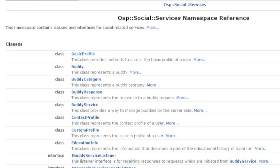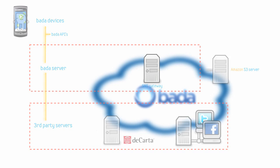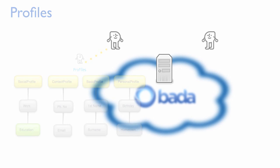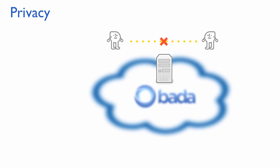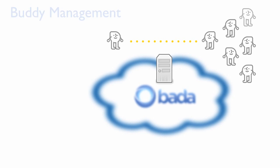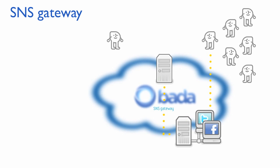The social services namespace contains the classes for building social relationships among Bada users. These services are made possible using the features of the Bada server. The services namespace functionality can be divided into five groups: Profiles, Privacy, Messaging and Buddy Management, together with the SNS gateway which provides the integration with third-party social networking applications.